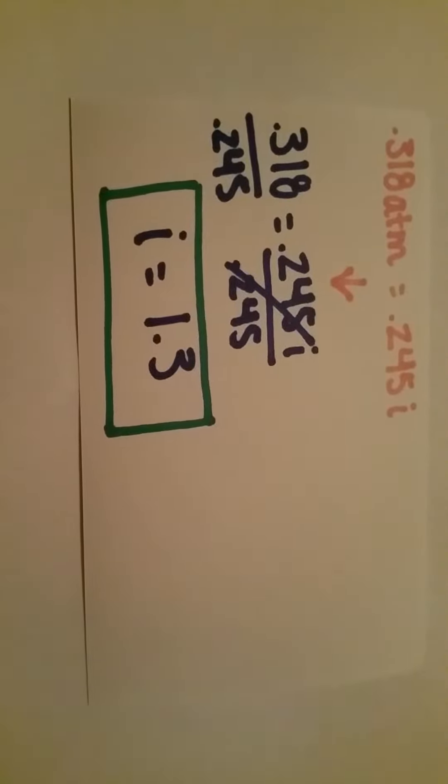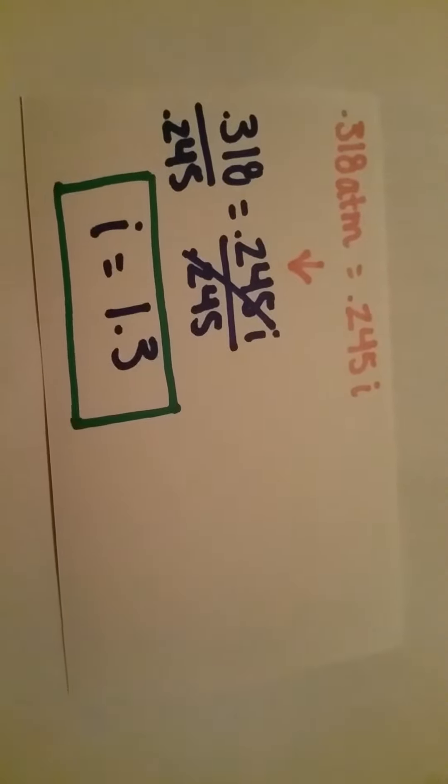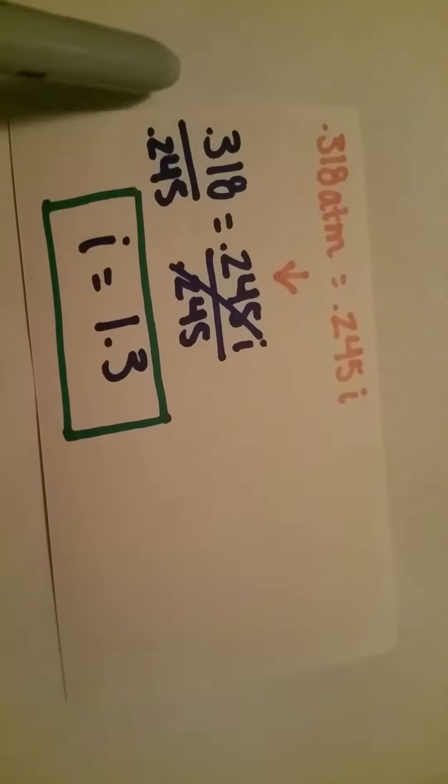After simplifying and solving, we get 0.318 atmospheres equals 0.245 I. Using basic algebra, we divide both sides by 0.245. So 0.318 divided by 0.245 gives us a value of I equal to 1.3. This is our answer.